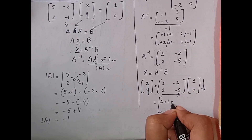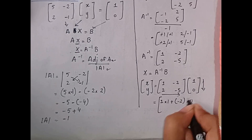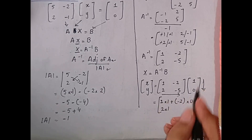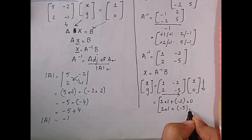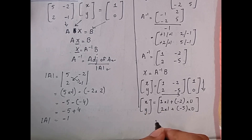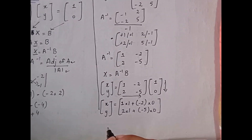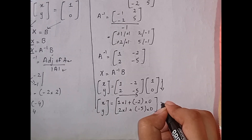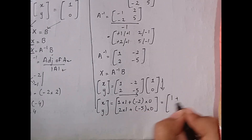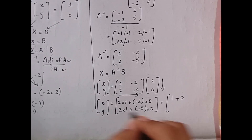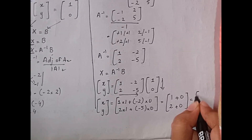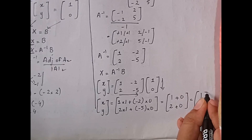So, for the first row: 1 multiplied by 1, plus (-2) multiplied by 0. Then for the second row: 2 multiplied by 1, plus (-5) multiplied by 0. This gives us the matrix equal to x and y. Now solving: 1 times 1 is 1, plus (-2 times 0) is 0, so the first value is 1. And 2 times 1 is 2, plus (-5 times 0) is 0, so the second value is 2.